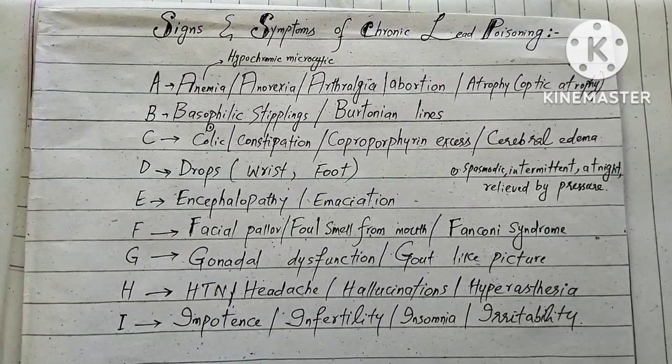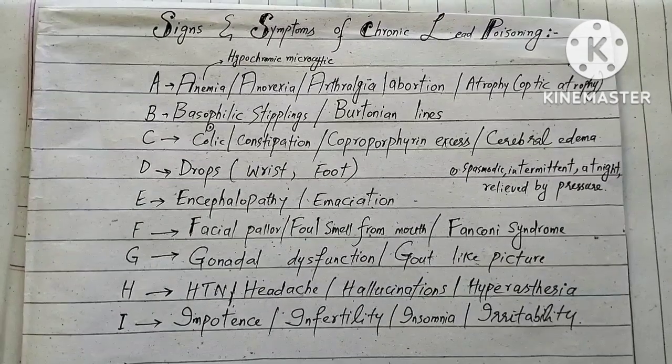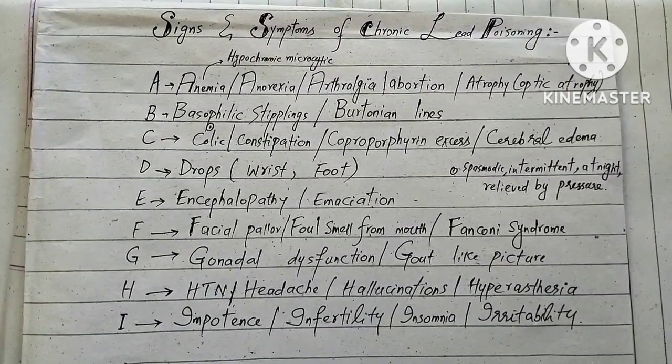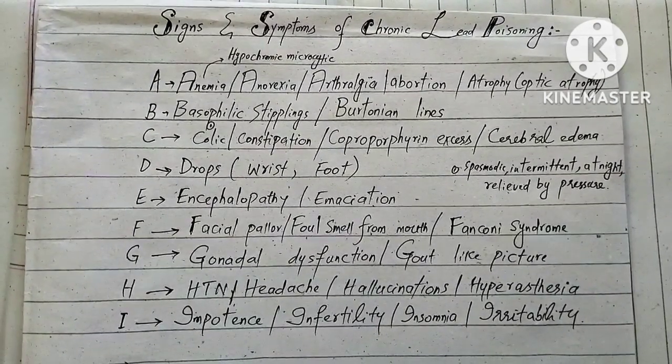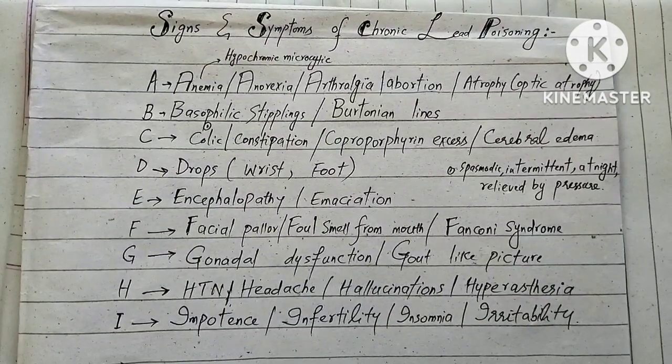Different alphabets of English — A, B, C, D, E, F, G, H, I — will help you to memorize the signs and symptoms of chronic lead poisoning.